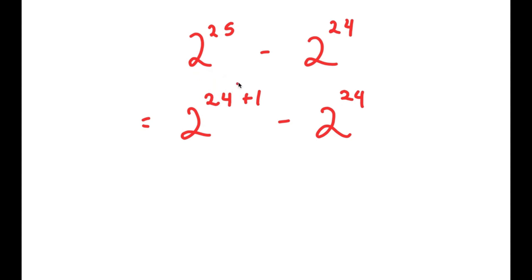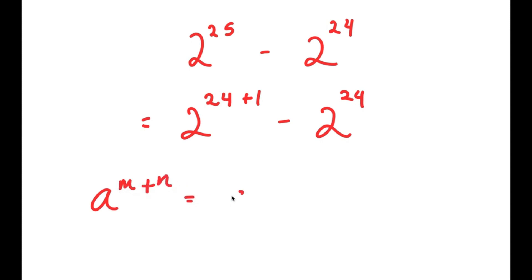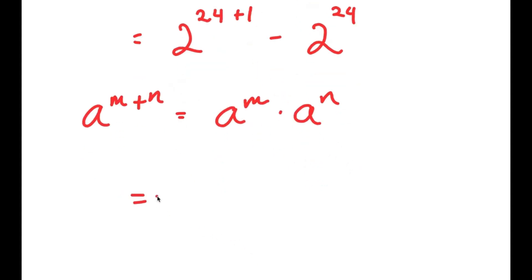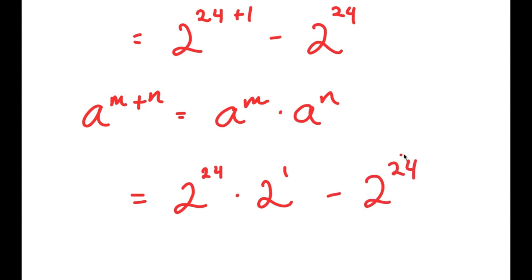The reason I did this is because we want both terms to have 2 to the power of 24. The best way to change 2 to the power of 25 is to rewrite it as 2 to the power of 24 plus 1. Now I can use the property a to the power of m plus n equals a to the power of m times a to the power of n, so 2 to the power of 24 plus 1 turns into 2 to the power of 24 times 2 to the power of 1, and I still have this minus 2 to the power of 24.